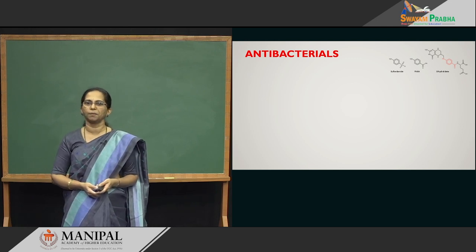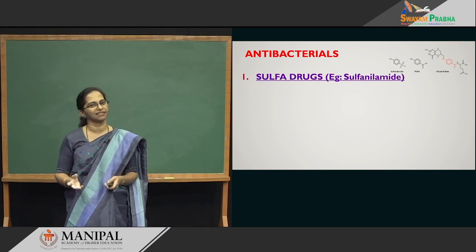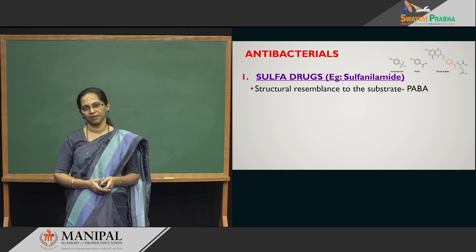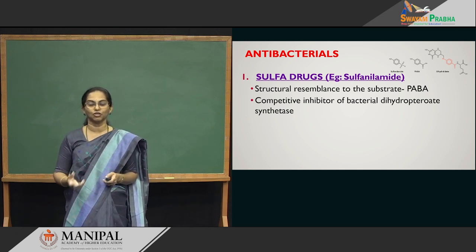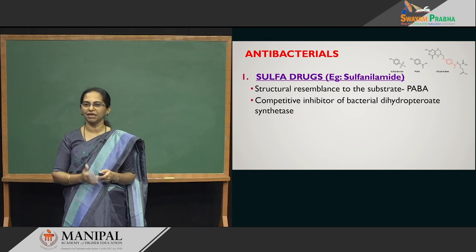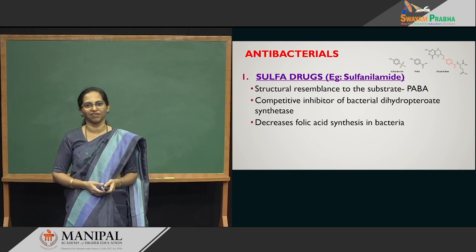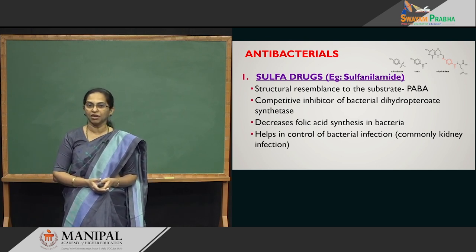Different types of inhibitors are used as drugs: antibacterials, antivirals, anti-tumor agents, and others. The most common antibiotic is sulfa drugs or sulfonamide. It has resemblance to PABA — para-aminobenzoic acid. When you give sulfa drugs, the bacteria gets confused and instead of using PABA, it uses sulfa drugs, inhibiting the bacterial enzyme dihydropteroate synthetase. Bacteria cannot grow or divide, so you are killing the bacteria. Humans are not affected because we get folic acid through our diet.